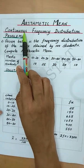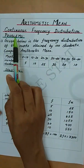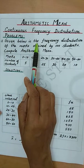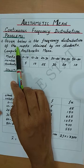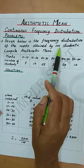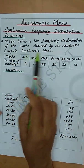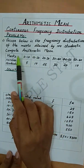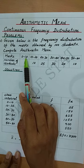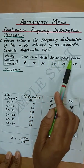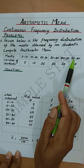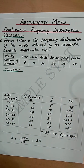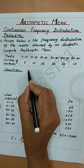Arithmetic mean for continuous frequency distribution. First problem: given the frequency distribution of marks obtained by one hundred students, compute the arithmetic mean. Here we are given marks as class intervals, and this is a problem under exclusive type class interval. Let's now proceed with the solution.